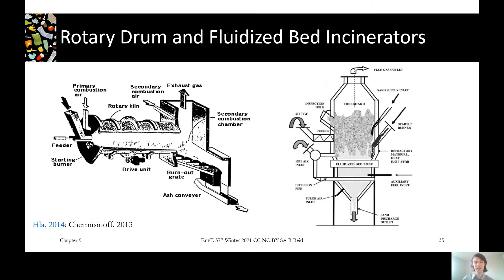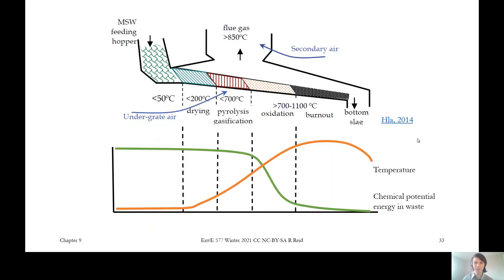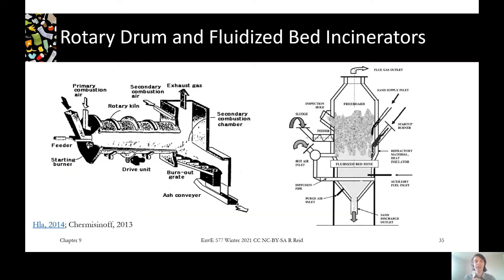In addition to the moving grate style reactor, where waste moves down like an escalator, there are other reactor types also aimed at achieving the three Ts: time, turbulence, and temperature. Rotary drum and fluidized bed reactors are other styles, more often applied for hazardous waste requiring very good burnout, or for very wet waste like wastewater sludge and leachate that needs good mass transfer to vaporize water. These styles achieve the same goals but use spinning motion or a constantly moving fluidized bed to create turbulence, rather than the moving grates typical of mass burn incinerators.